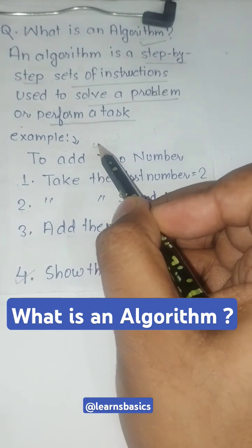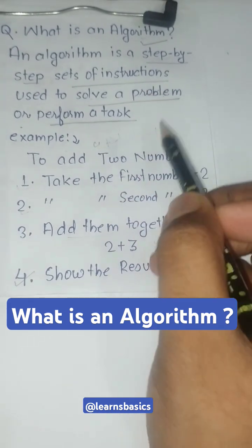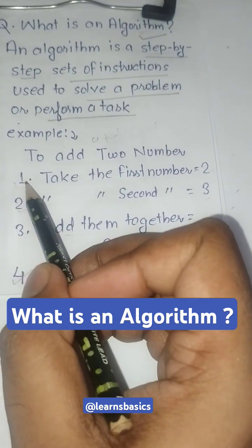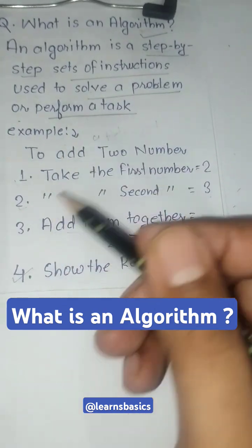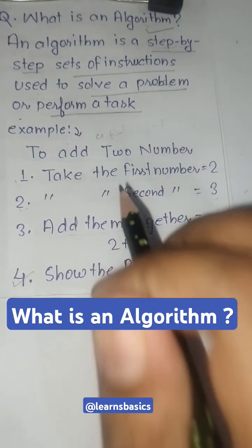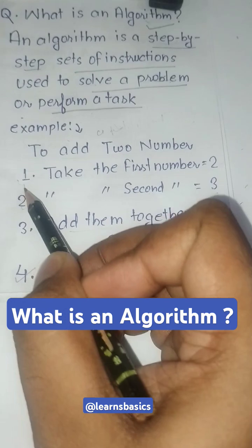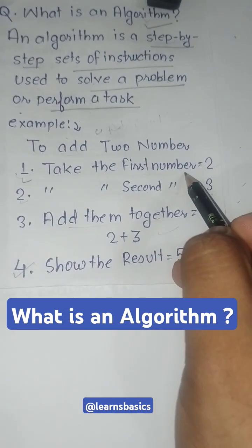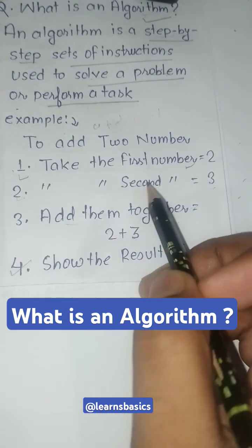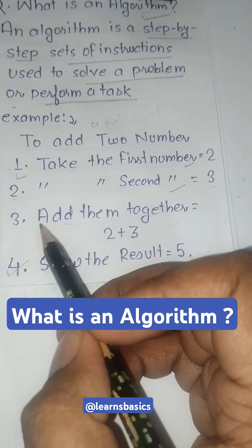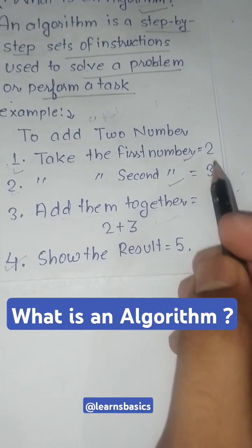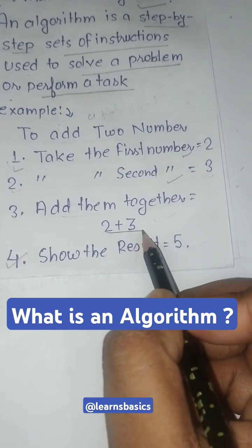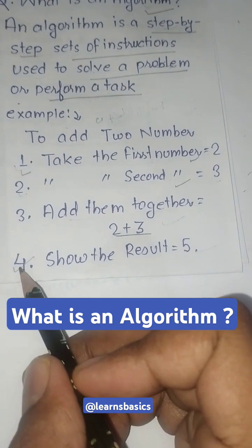Here's an example: addition of two numbers. First, we give step-by-step instructions to solve this problem. Step 1: Take the first number equals 2. Step 2: Take the second number equals 3. Step 3: Add them together, which means 2 plus 3.